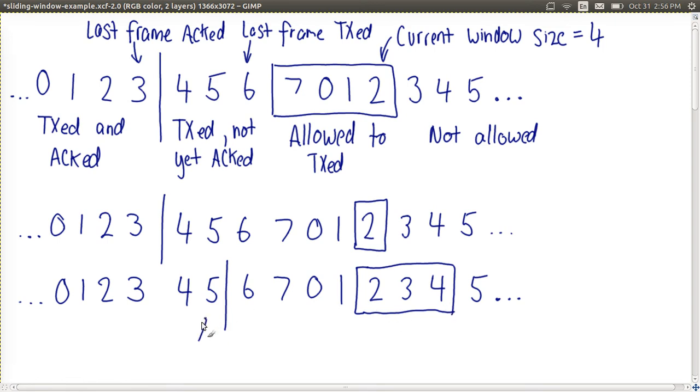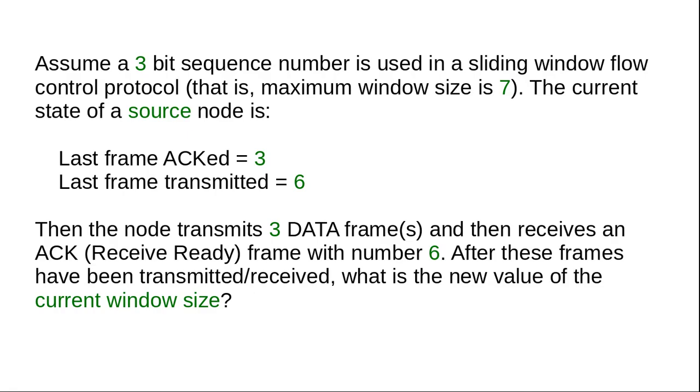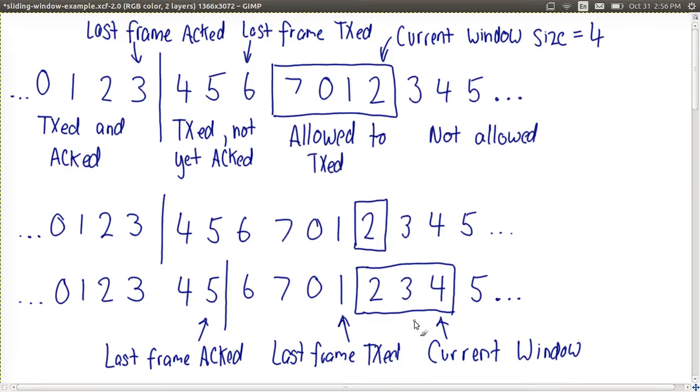The end result is that the last frame ACK is 5. The last frame transmitted is 1. And the current window size is 3. And from that we can answer our question, which is, what is the new value of the current window size? So the answer in this case is 3. It is 3 frames long.